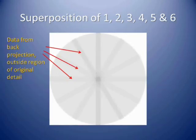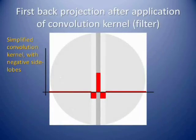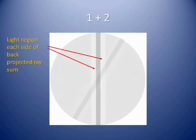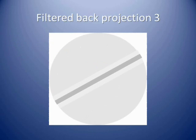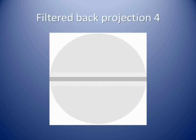To undo this blurring effect, we must apply a deconvolution. The deconvolution is based on a kernel shape, which is applied to each projection prior to their superimposition. As you can see, several of these back projected rays have been treated using the convolution kernel, which results in a light region each side of the main back projection ray.